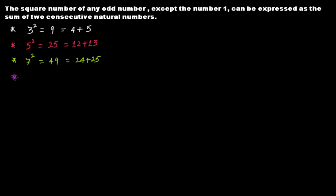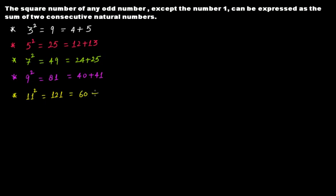Take the next odd number, 9. Find its square and you get 81, which can be written as 40 plus 41. If you take 11, its square is 121, which gives you 60 plus 61. And for 13, the square is 169, which can be written as 84 plus 85.